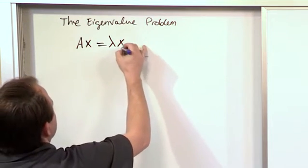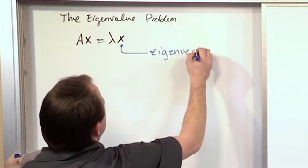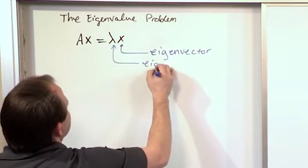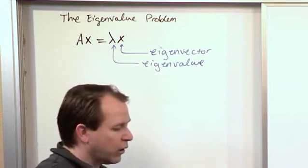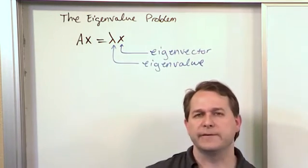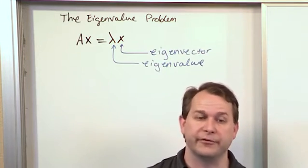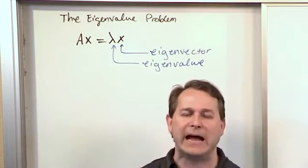This x here is called the eigenvector, and this lambda here is called the corresponding eigenvalue. Basically, the way that this works in real problems is in order to find the eigenvectors, you have to first find the eigenvalues. Those are just numbers. Once you find the eigenvalues, then you can find the corresponding eigenvectors.